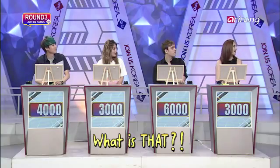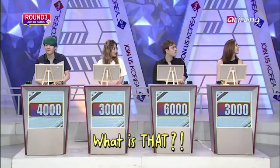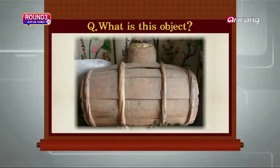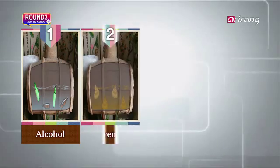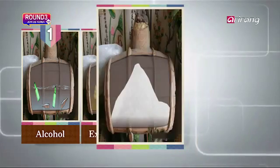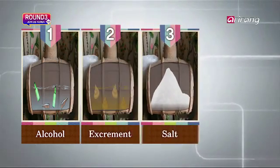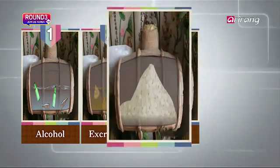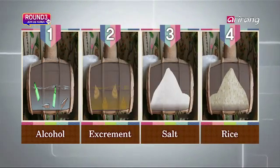What is that? Let's see our options. A barrel for... Number one, alcohol. Number two, excrement. Number three, salt. Number four, rice.